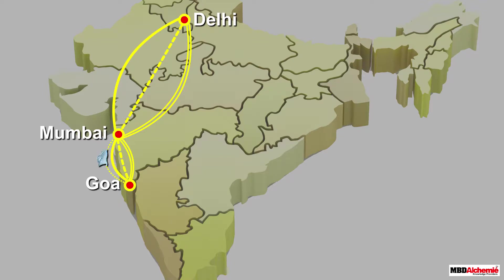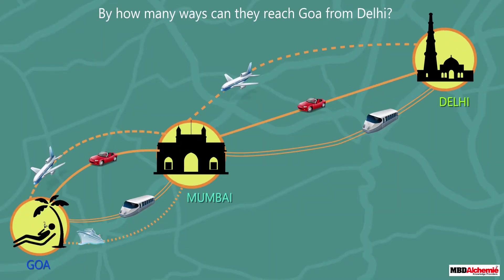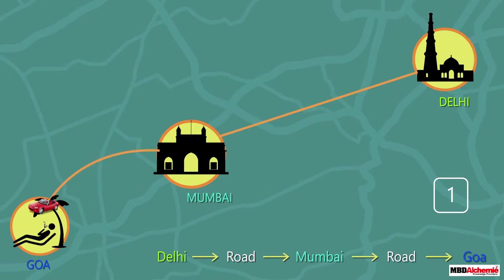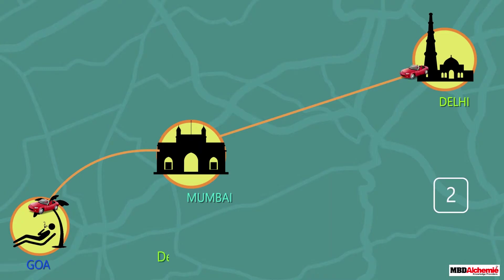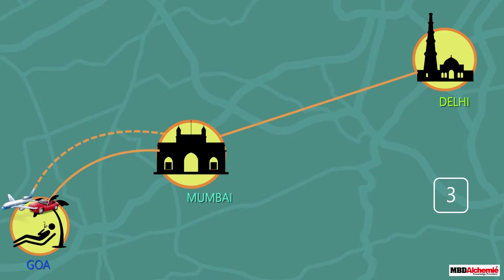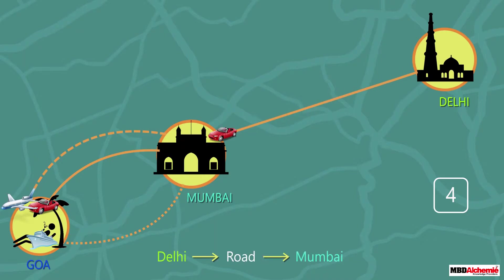From Mumbai to Goa they have four ways to travel: by air, road, train, or ship. The first way is traveling to Mumbai by road and then from Mumbai traveling by road to Goa. The second way is going to Mumbai by road and then from Mumbai traveling by air. The third way is going to Mumbai by road and then traveling by ship. The fourth way is going to Mumbai by road and then traveling by train to Goa.